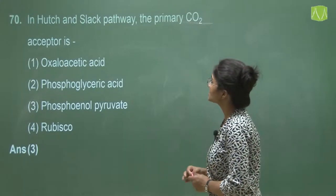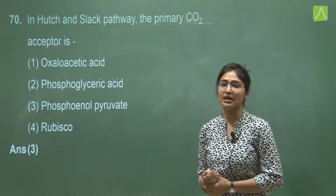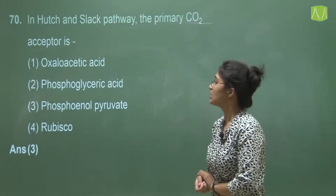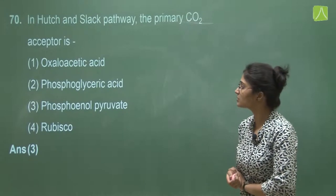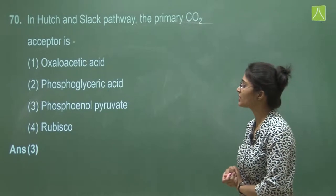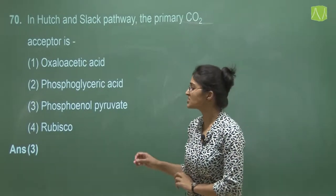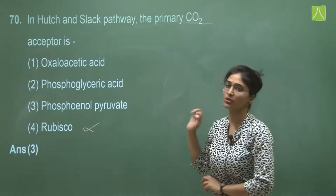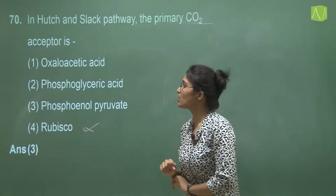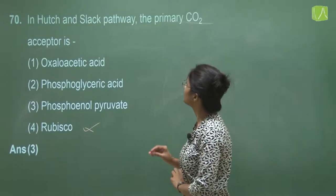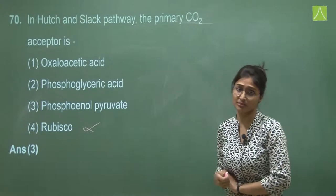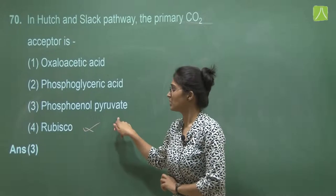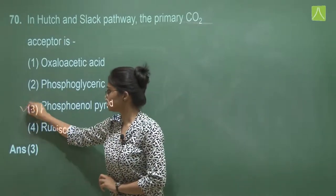Question 70 asks about the primary carbon dioxide acceptor in the Hatch and Slack pathway. Option one is oxaloacetate — a 4-carbon compound but not the primary acceptor. Option two is phosphoglycerate. Option three is phosphoenolpyruvate — this is the correct 3-carbon primary acceptor. Option four is Rubisco — this is an enzyme, not a substrate. So the right answer is option three, phosphoenolpyruvate.